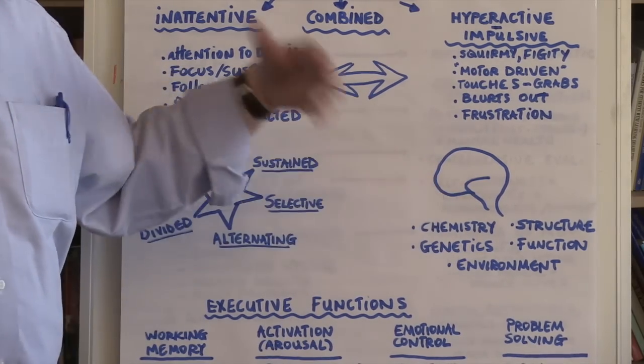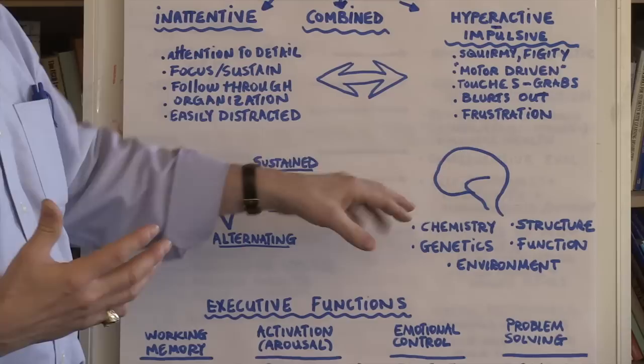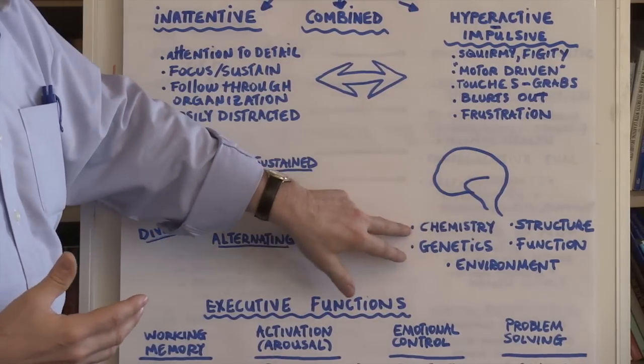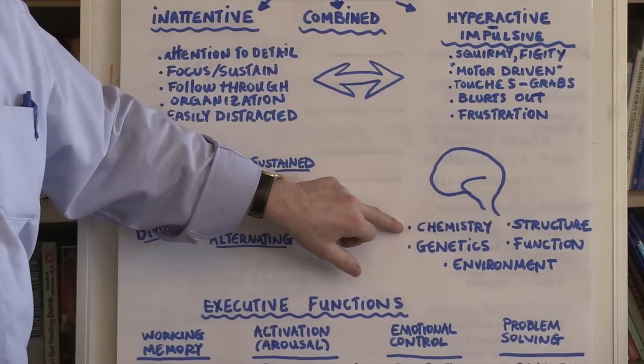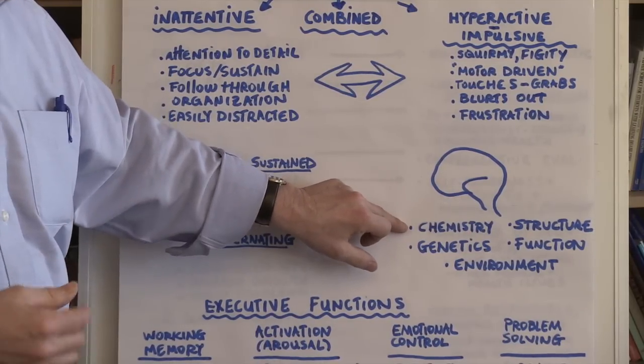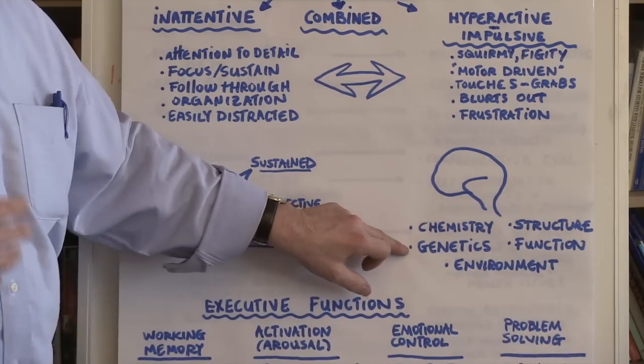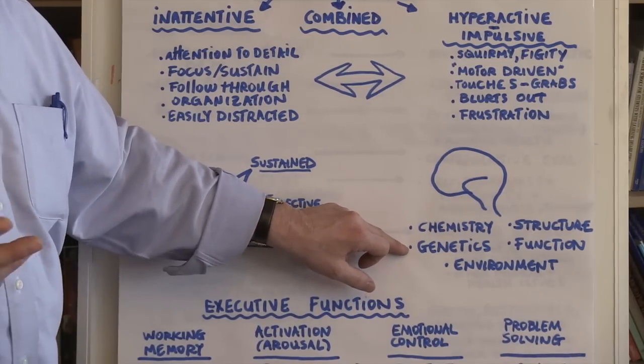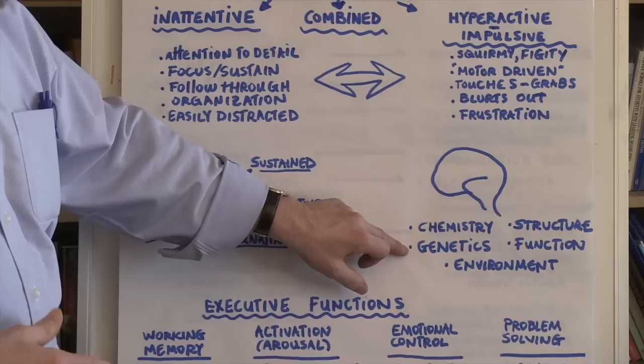When we talk about ADHD, we talk about it happening in the brain. And we understand that there's a chemical or neurobiological neurotransmitter component to ADHD. There may be some genetic aspect to it as well. ADHD, just like LD, tends to run in families.